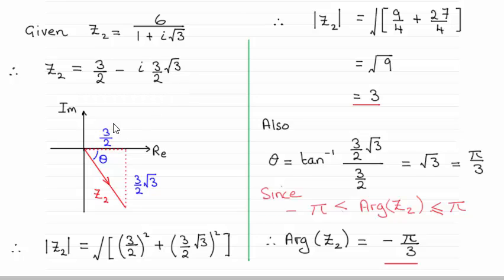Now I've sketched this complex number on an Argand diagram, because I believe it helps, especially when it comes to working out the arg. For the modulus, remember all we are using is Pythagoras' theorem here. I've shown z2 going down into this quadrant here,